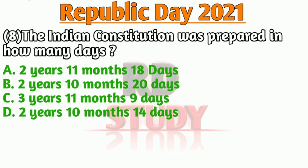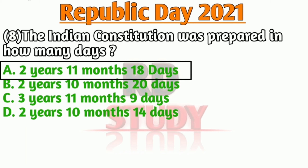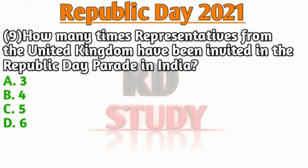Our next question is: the Indian Constitution was prepared in how many days? The right answer is option A — two years, 11 months and 18 days. The Indian Constitution was prepared in two years, 11 months and 18 days.